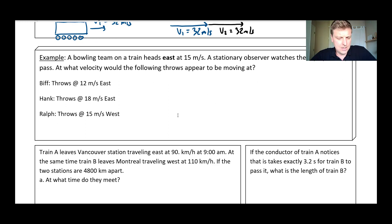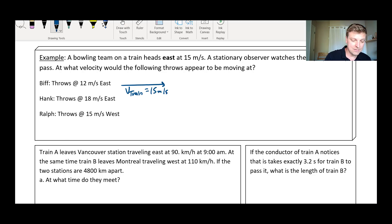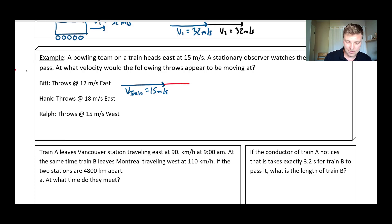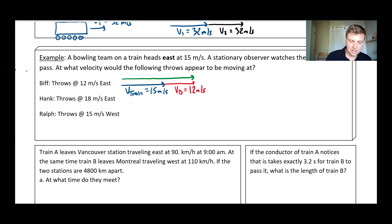Let's look at a very realistic example of a bowling team on a train. This train is heading east at 15 meters per second, and a stationary observer is watching the action. On the train, the bowling team is bowling balls in various directions. Biff lines up and throws the bowling ball at 12 meters per second to the east. So relative to a stationary observer, I've got V train at 15 meters per second east, and then I add to that the velocity of Biff's throw — VB — at 12 meters per second. Relative to a stationary observer, this bowling ball is traveling at a total of 27 meters per second.